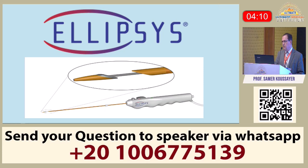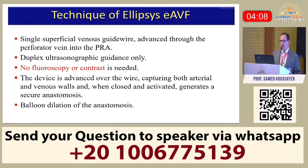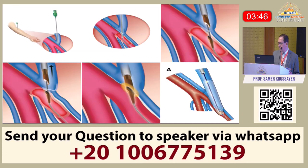The Ellipsis from Medtronic is a different device. It uses a single superficial venous guidewire that goes through the perforator vein and is advanced all the way to the proximal radial artery. It requires only ultrasound guidance — no fluoroscopy and no contrast. The device is advanced over the wire, captures both the arterial and venous walls, fires to generate the anastomosis, and then requires balloon dilation at the end to dilate the anastomosis.